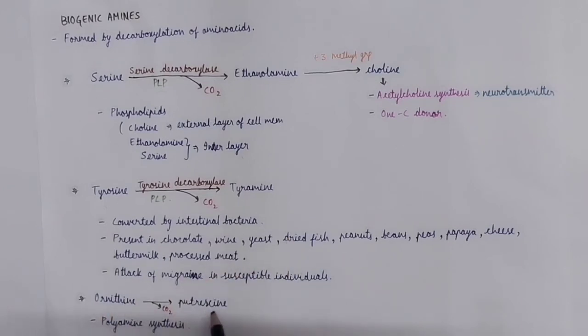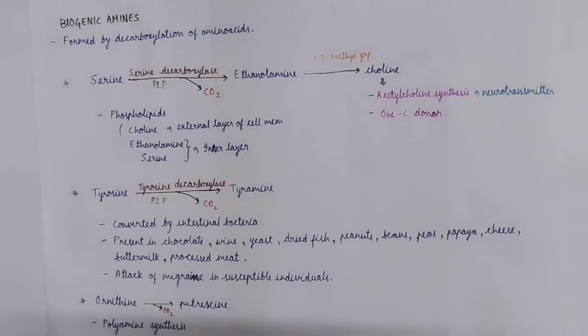Ornithine is converted to putrescine by decarboxylation reaction, which we saw in polyamine synthesis.